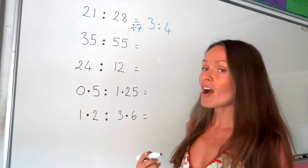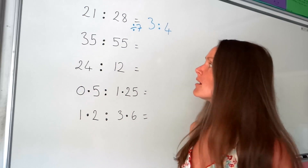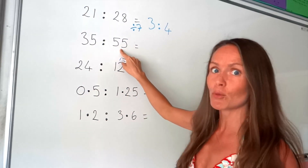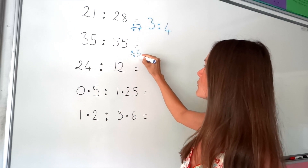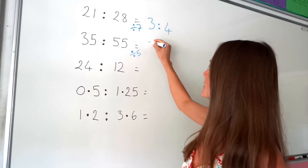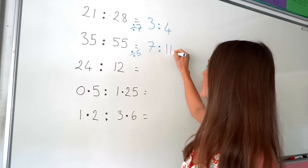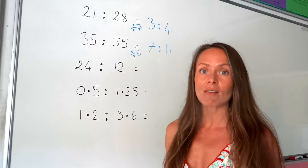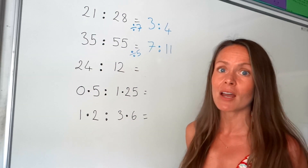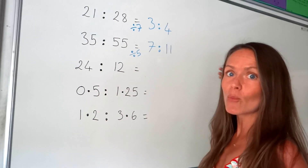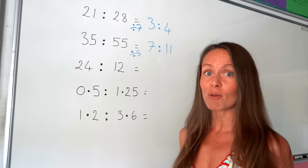On the next one, the highest common factor is 5 — the biggest number that fits exactly into both of these. So I'm going to divide by 5. 35 divided by 5 is 7, and 55 divided by 5 is 11. Don't worry if you can't find the highest common factor — it just means you might have to simplify more than once, just like when you're simplifying fractions.